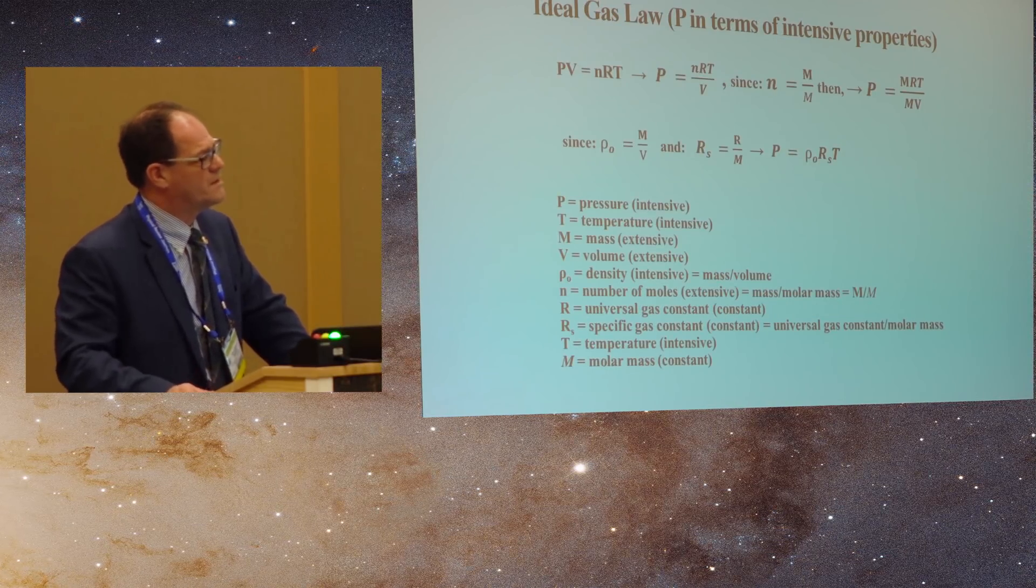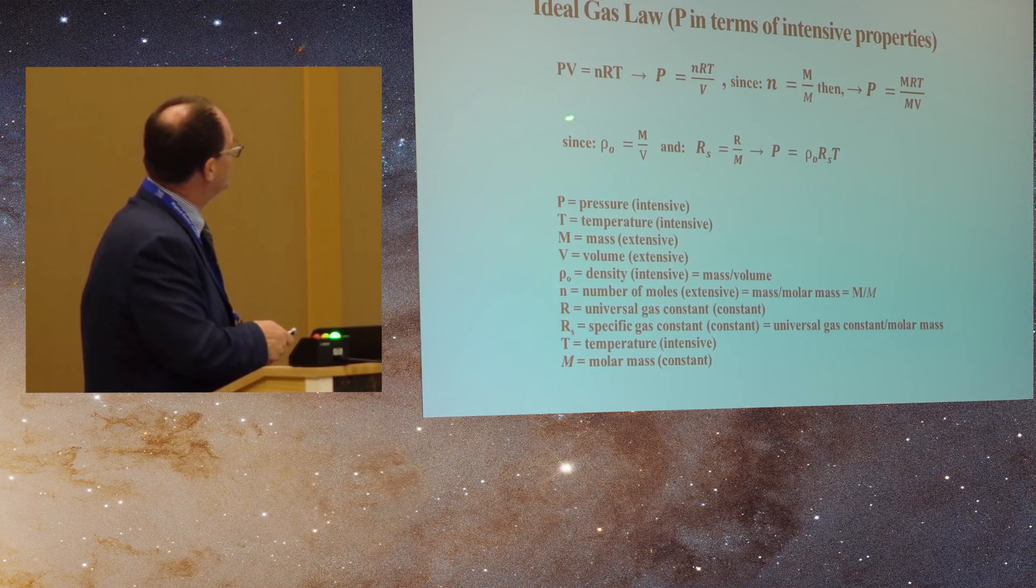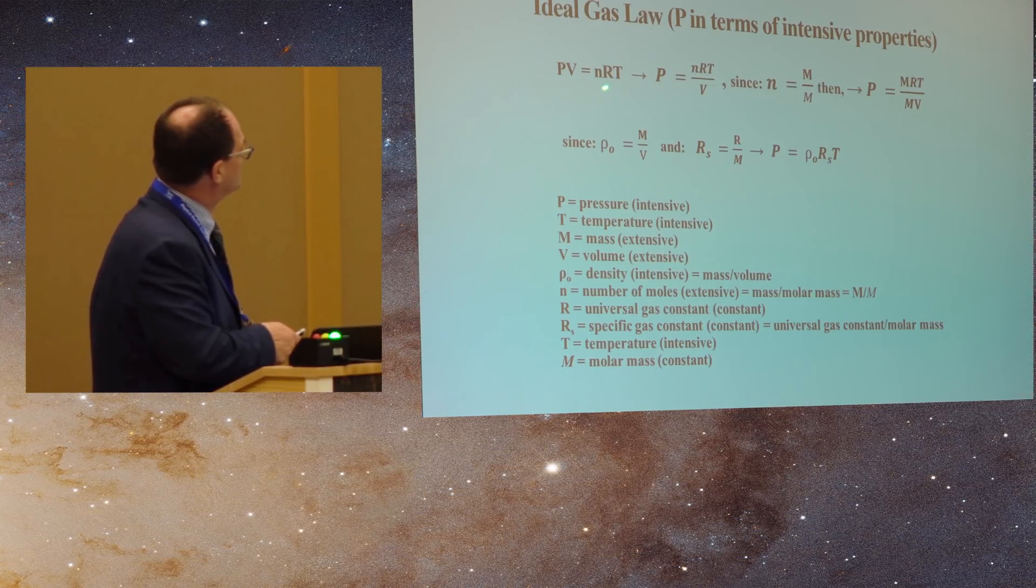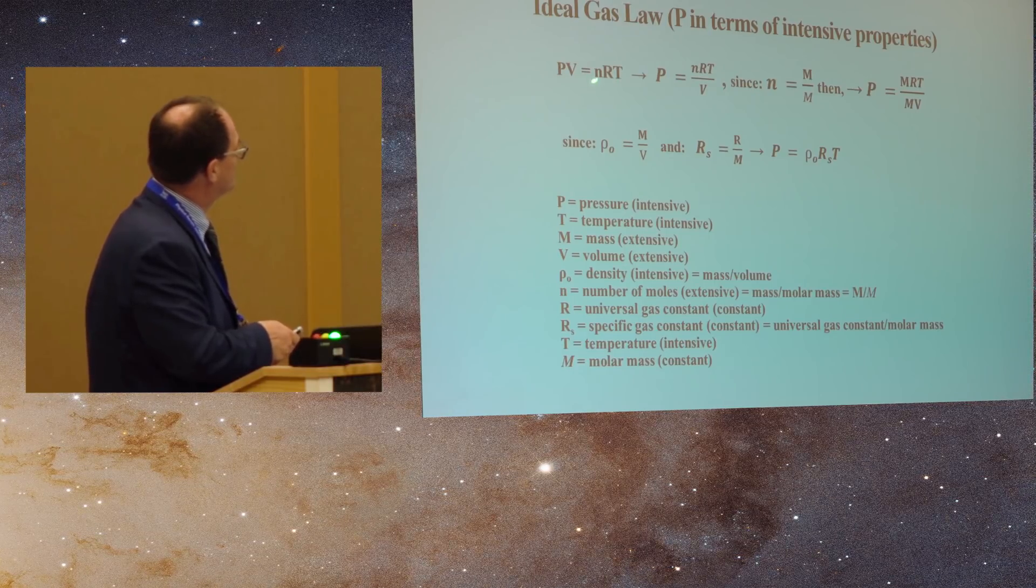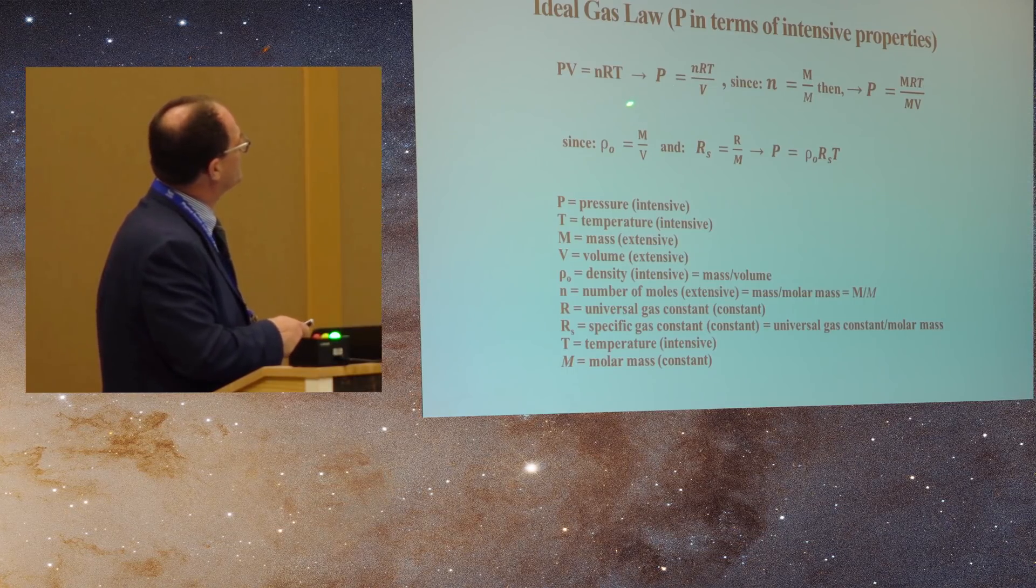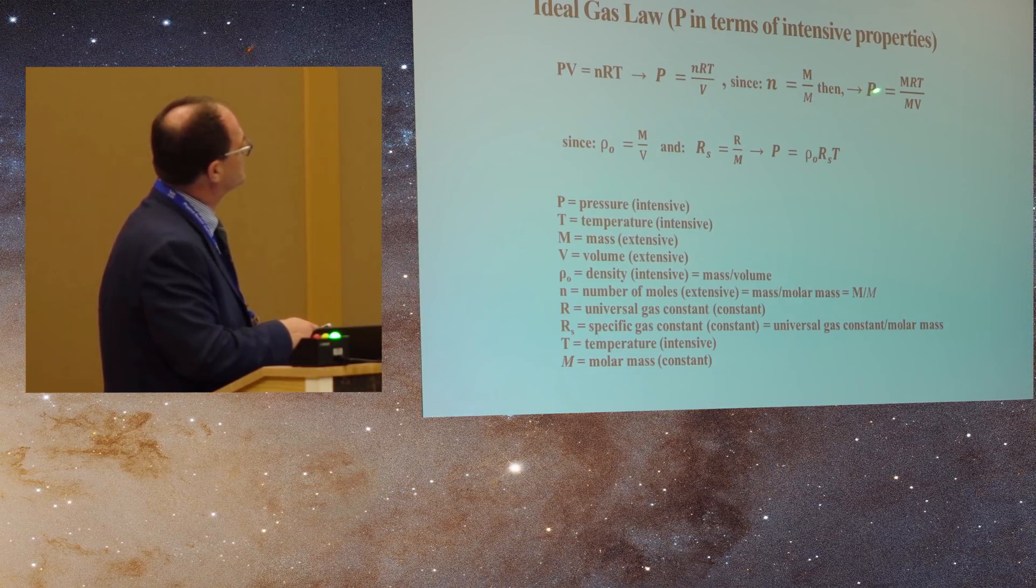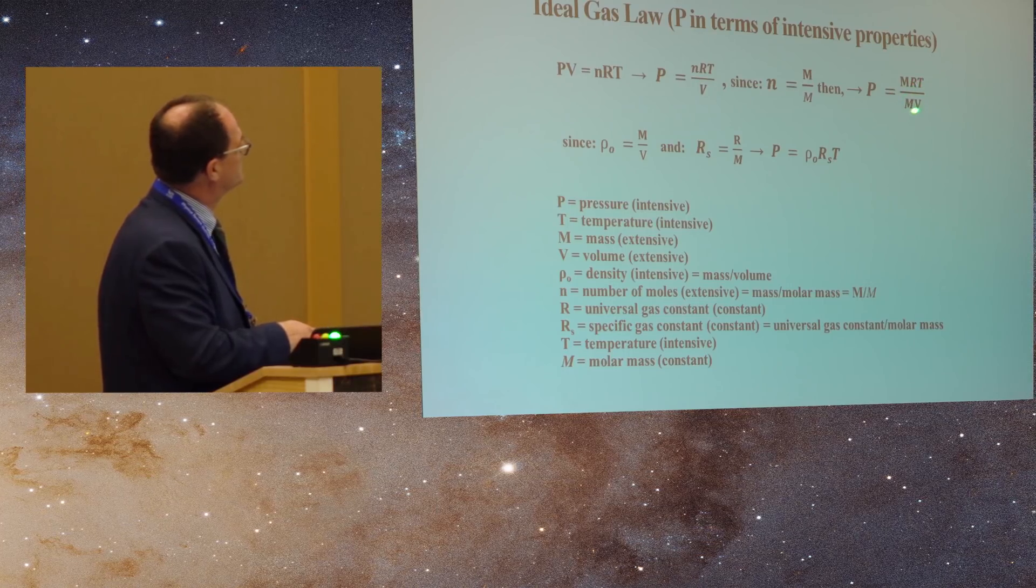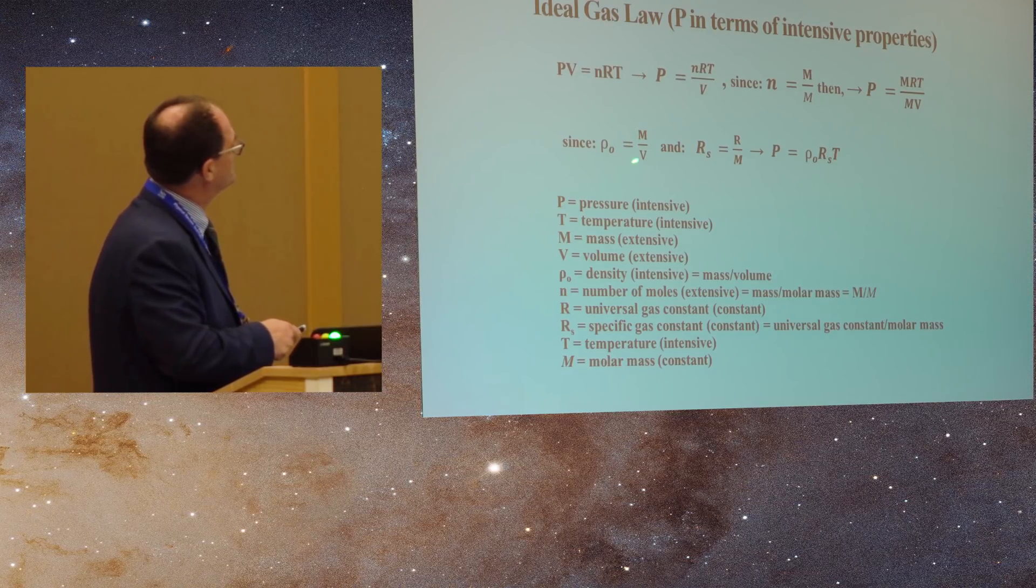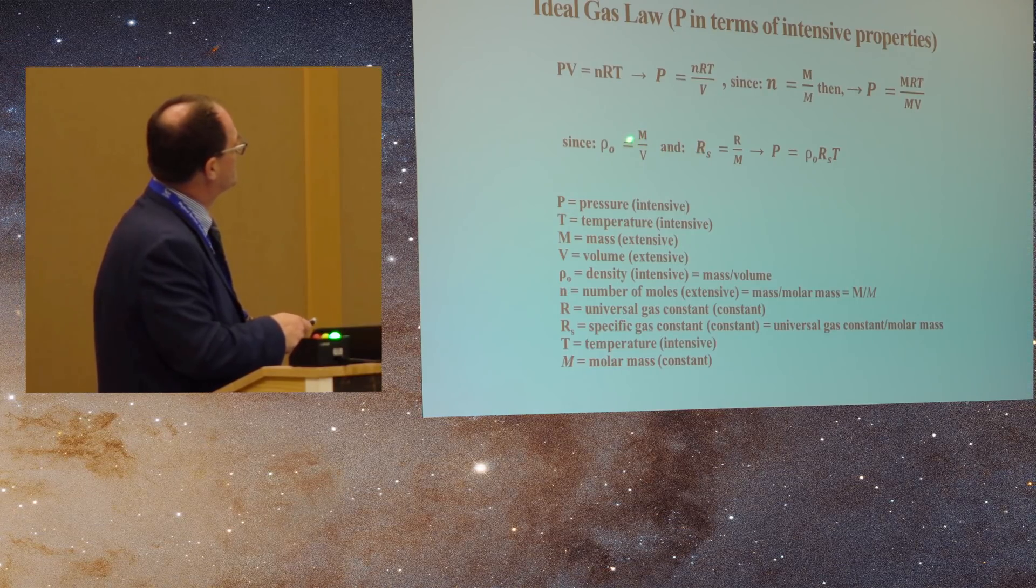So you can just see this from the ideal gas law. So if you look at the ideal gas law, well pressure is intensive and volume is extensive, N is extensive, R is a constant and T is intensive. So you can just rearrange for P and then you can express N as mass divided by molar mass and then you can get P in terms of mass, the gas constant, temperature, the molar mass and the volume. And since density is mass over volume, density is intensive so you get two extensive terms together that create an intensive term.